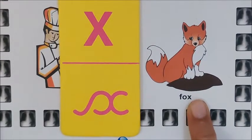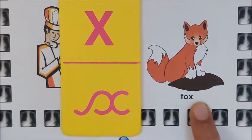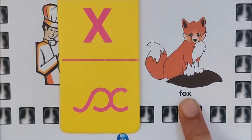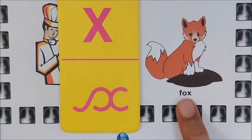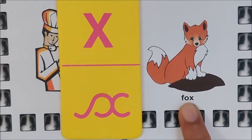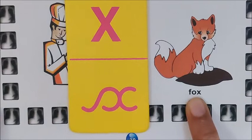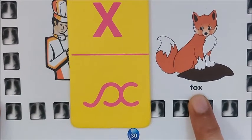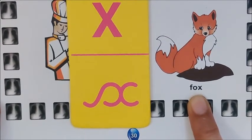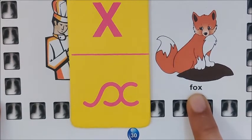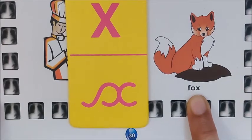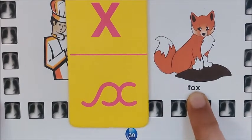Now let us look at this picture. What is this, children? It is an animal — it is a fox. Repeat after me: Fox. Did you hear the sound of X in the word fox? This is a fox and it is a wild animal. Wild animal means that it is very dangerous.